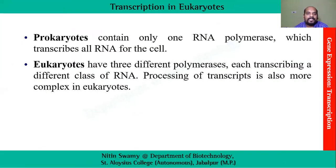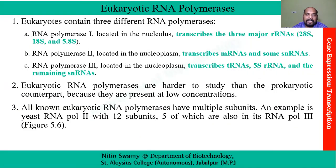In terms of prokaryotes we have seen that there is only one RNA polymerase which was able to transcribe all the RNA in the cell. On the other hand, in eukaryotes they have three different polymerases, each transcribing a different class of RNA, and the processing of transcripts is also more complex. The three different RNA polymerases are: Polymerase 1, responsible for transcription of rRNAs; Polymerase 2, responsible for transcription of mRNA; and Polymerase 3, responsible for transcription of tRNA, 5S rRNA, and remaining snRNAs.